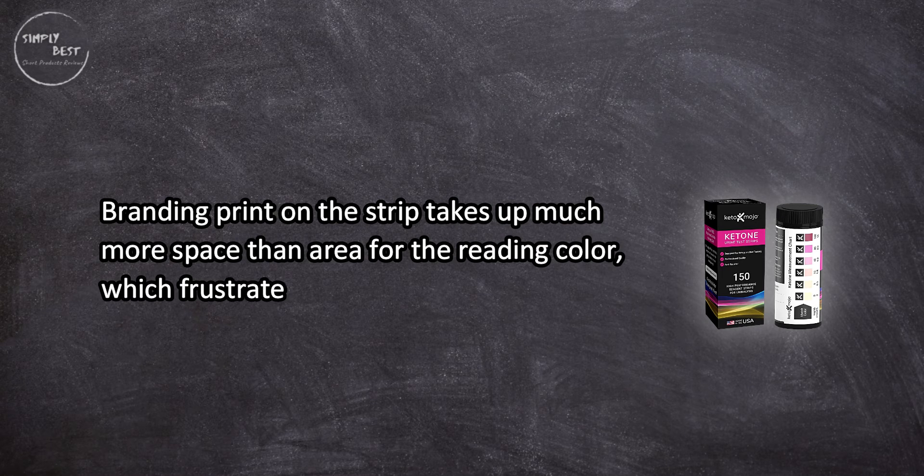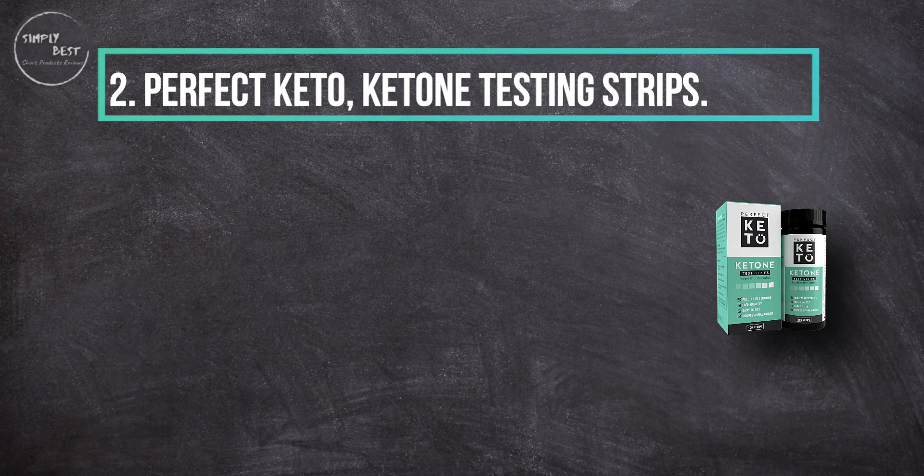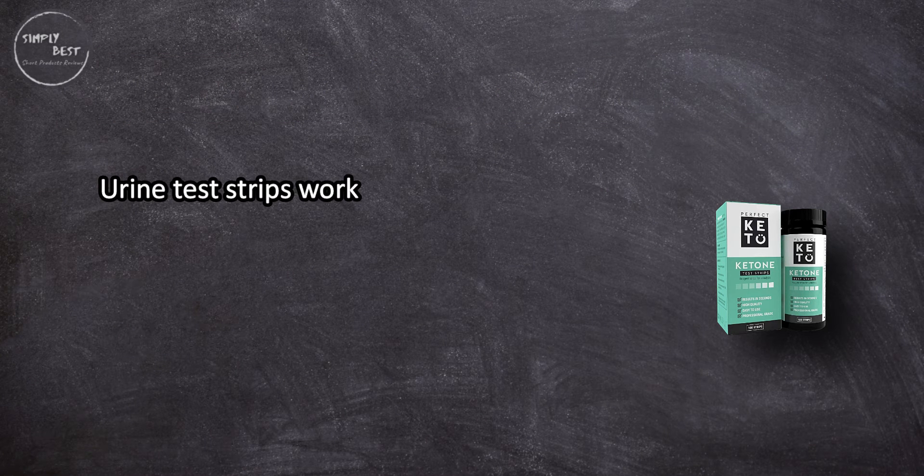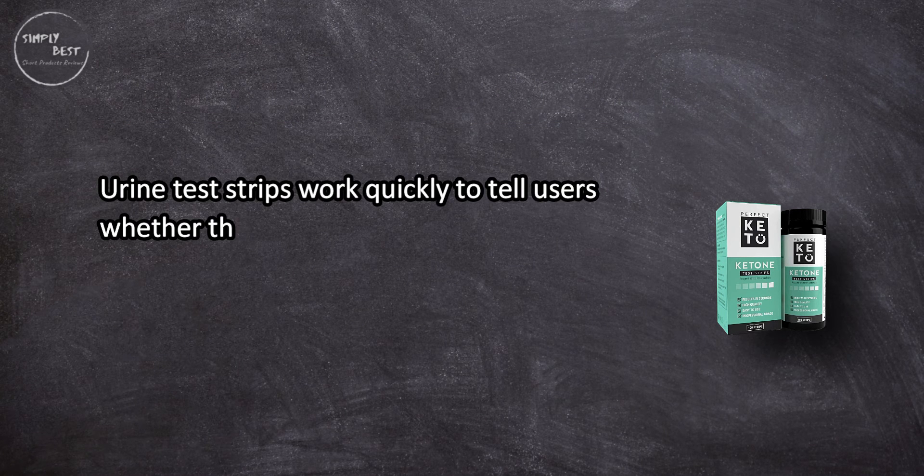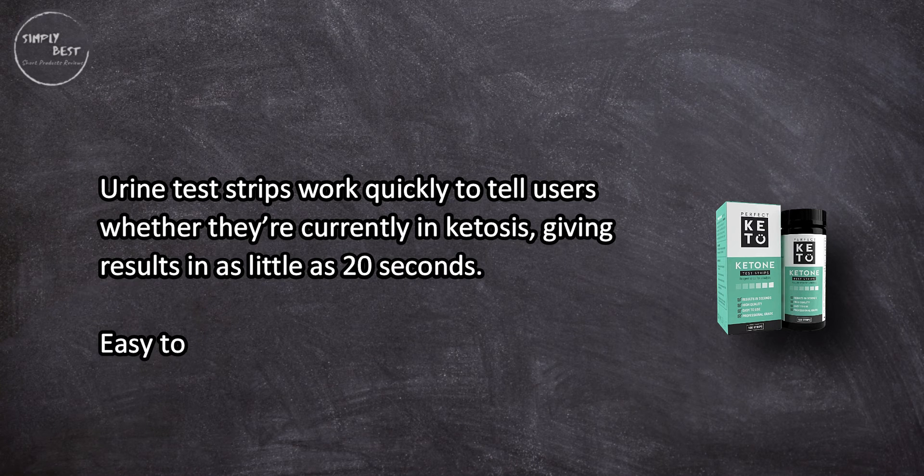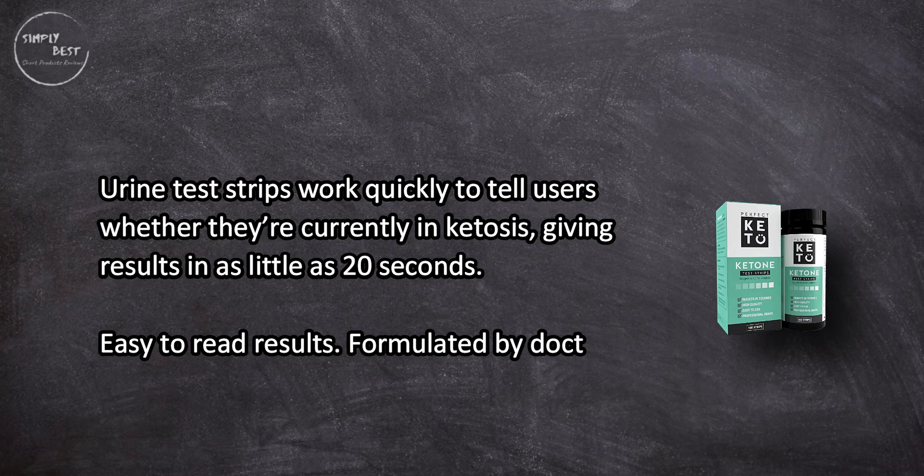At number two, Perfect Keto Ketone Testing Strips. Urine test strips work quickly to tell users whether they're currently in ketosis, giving results in as little as 20 seconds. Easy to read results, formulated by doctors for top shelf quality.